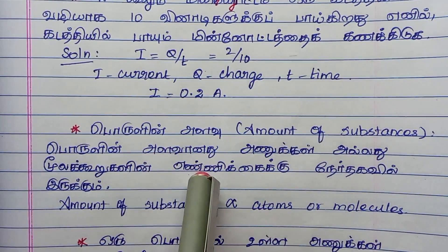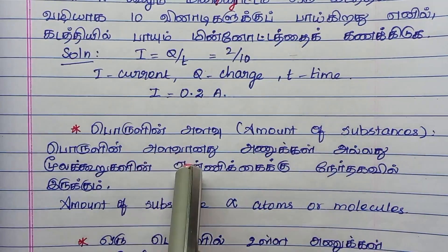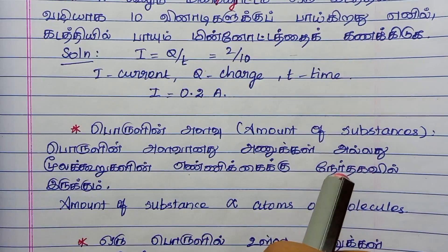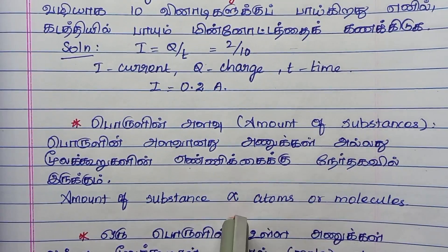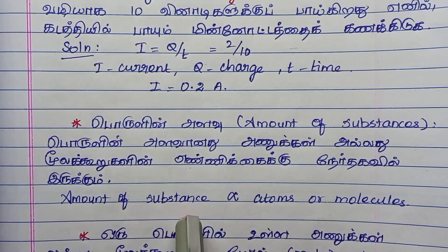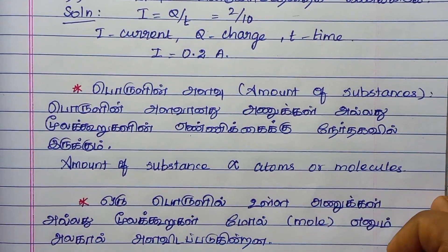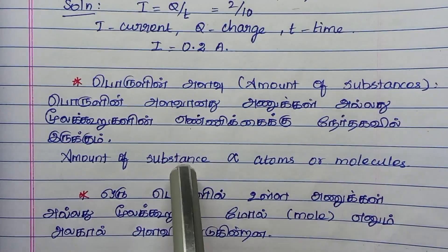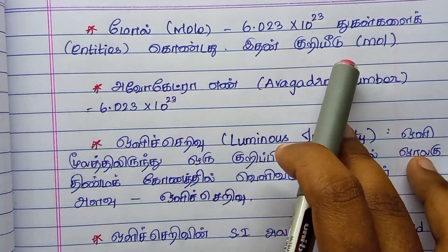The amount of substance is directly proportional to the number of atoms or molecules. One mole of substance corresponds to a defined amount — the mole is the SI unit of amount of substance.